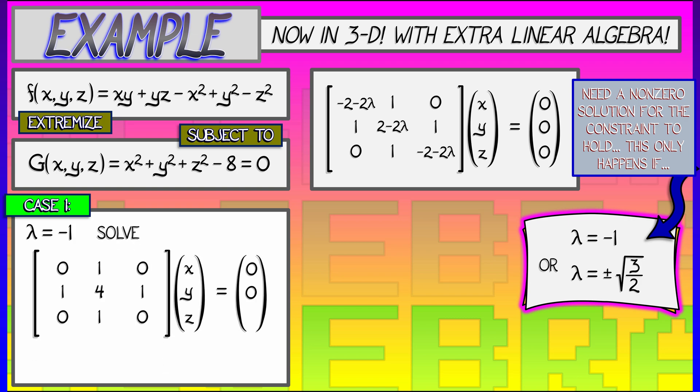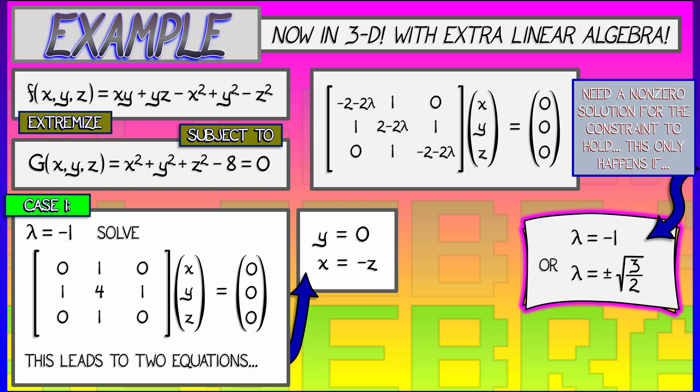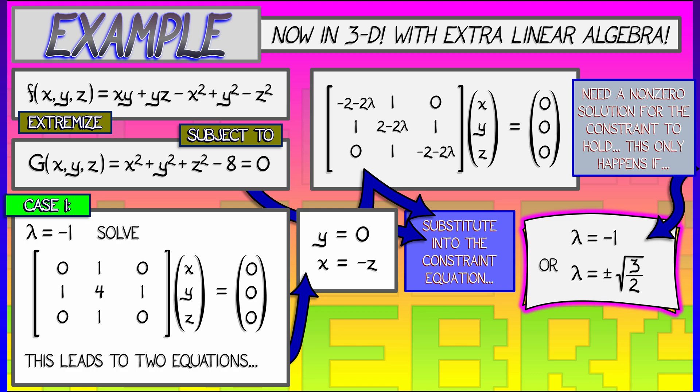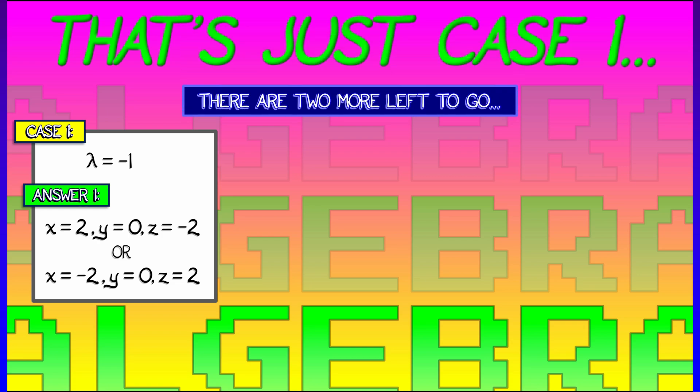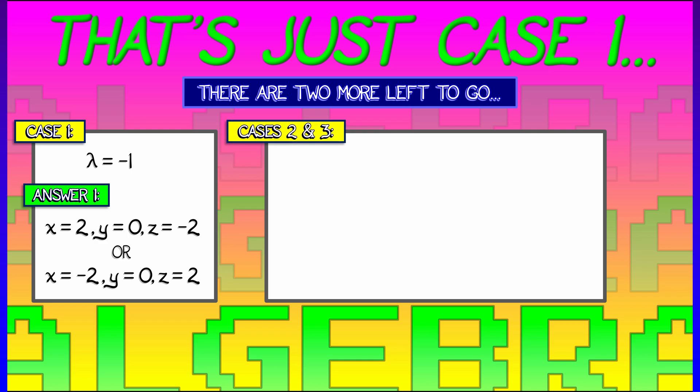Let's say that λ = -1. I substitute that value into the linear system, and I solve it. I read off the first equation. It tells me that y = 0. I read off the second equation in that linear system, and it tells me that x + 4y + z = 0. Since y vanishes, that means that x = -z. Now, I substitute this into the constraint equation, that g = 0. And this tells me that x² + 0 + x² = 8. That means that x is going to be ±2, y is going to be 0, and z is going to be equal to ∓2. Okay, that is a pair of solutions of critical points, but we're still not done, because that's just case one. And there are two more cases left to go.